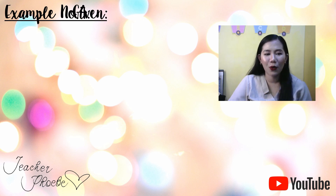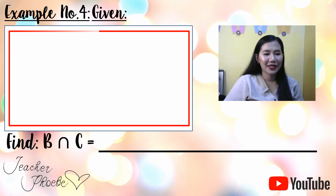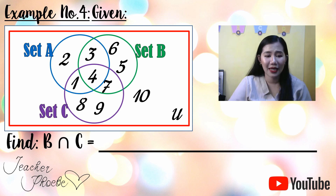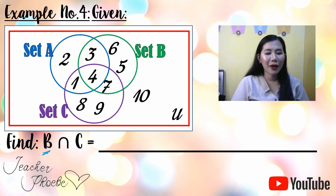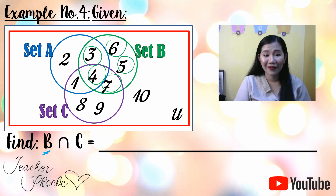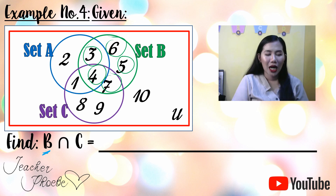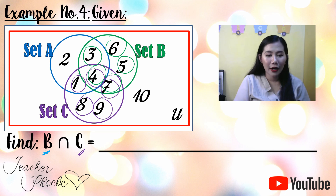Let's have Example Number Four. Find the intersection of B and C. We have a universal set with three sets — A, B, and C. Set B (green circle) has elements 6, 3, 4, 7, and 5. Set C (violet circle) has elements 1, 8, 9, 7, and 4.